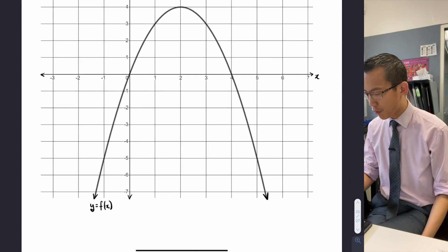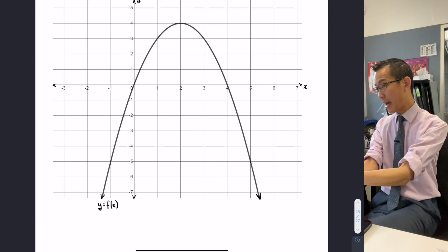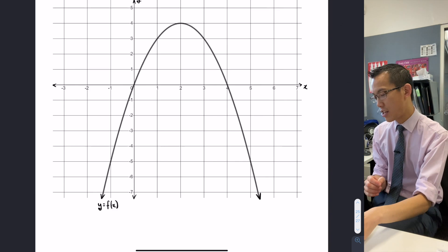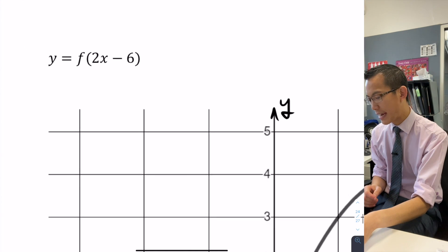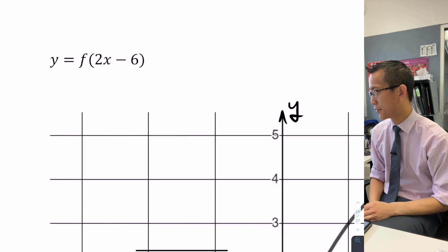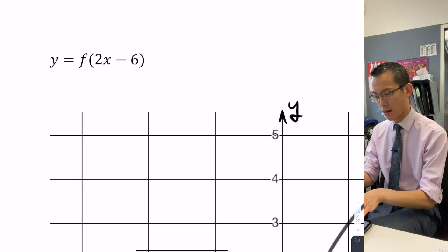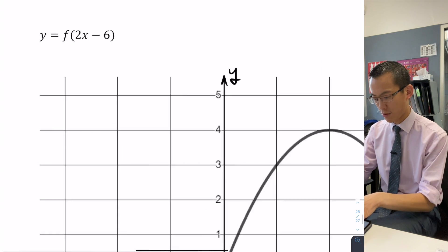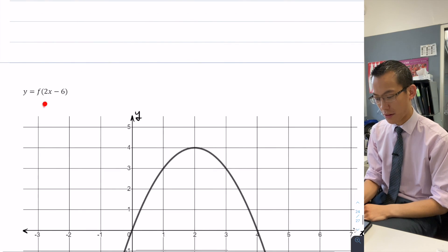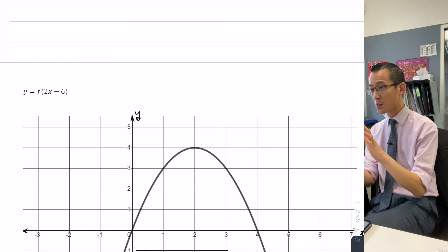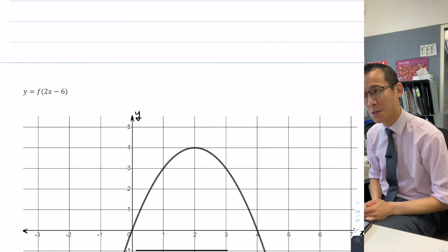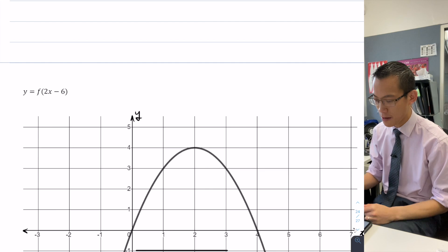If this curve is presented to you and said, here's a function, can you tell me what this related function looks like? y equals f of 2x minus 6. How do we get from this original graph to what this guy looks like? There's these two numbers here, the 2 and the minus 6, and we want to know what they do.